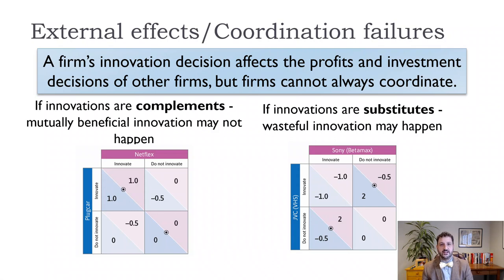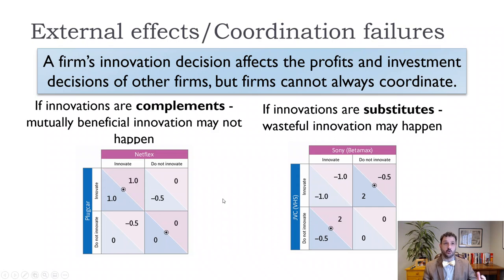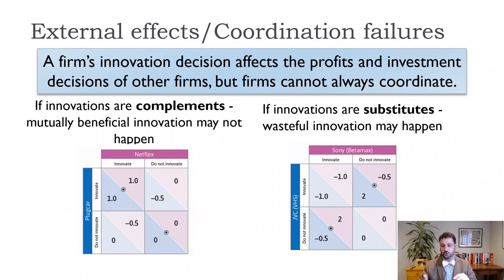We can think about innovation coordination issues in terms of whether innovations are complements — they work together — or substitutes — you use one instead of the other. For complements, we have a fictional example: Netflix and PlugCar. The idea is that they work together. This is important when you think about electric cars and charging stations — we need both to exist for either to be successful. So we want to encourage things like charging stations so that people feel comfortable buying electric cars.